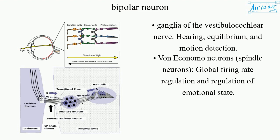Von Economo Neurons (spindle neurons): global firing rate regulation and regulation of emotional state.